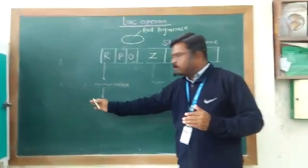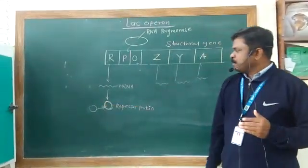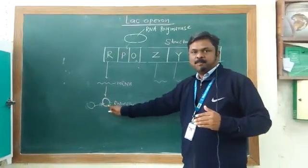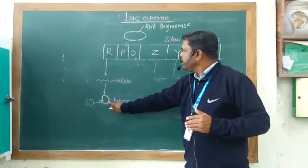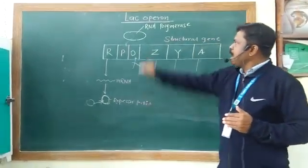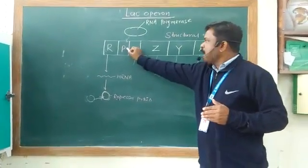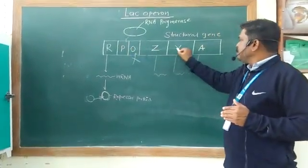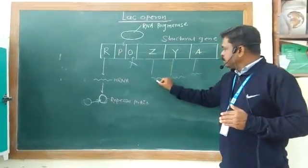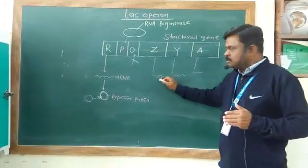So during this stage, when the bacteria are in a lactose medium, the lactose allolactose binds to the repressor protein. So as allolactose binds to the repressor protein, the repressor protein will not bind to the operator. As a result, RNA polymerase binds to the promoter, and this RNA polymerase will move on the structural genes. As a result, messenger RNA is produced.